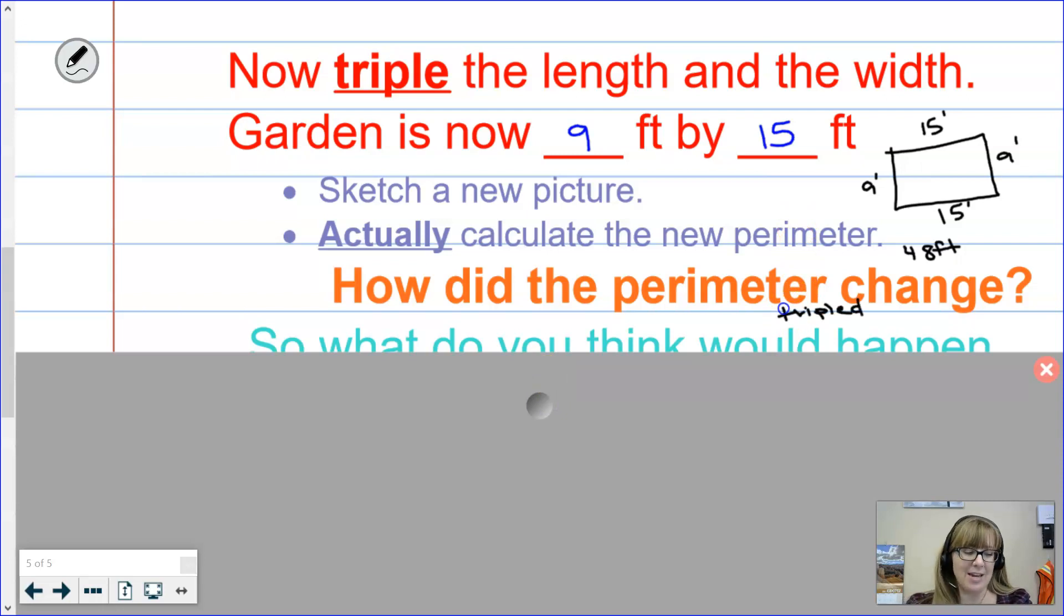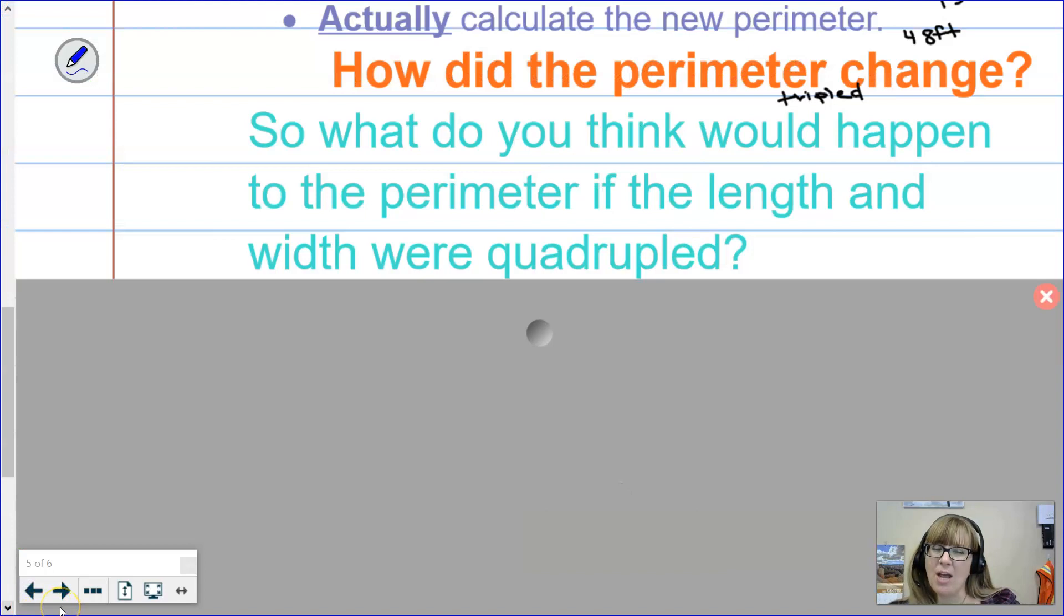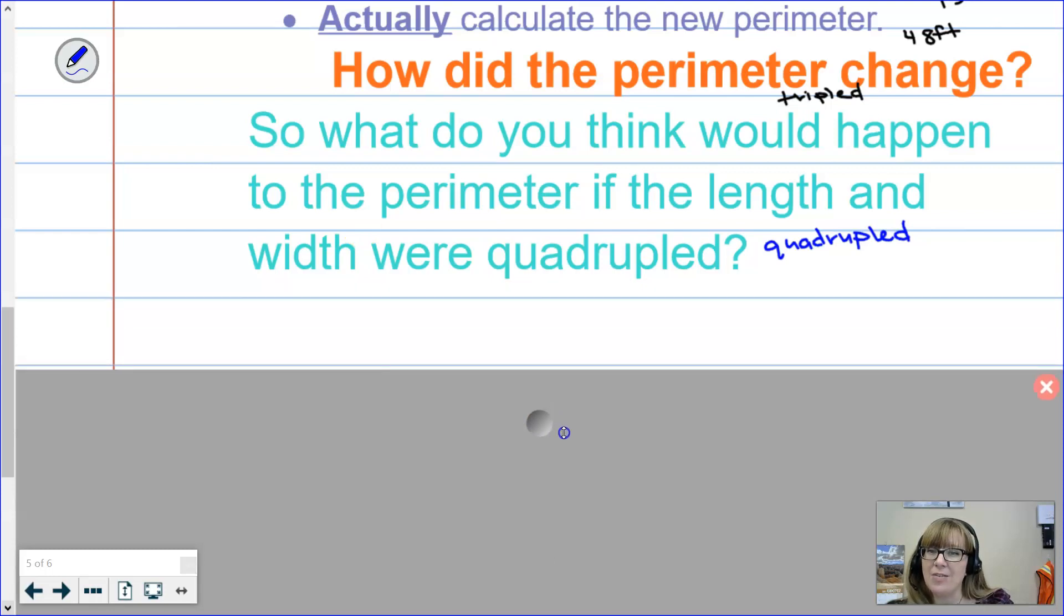So now it's time to apply math practice eight. What if now I quadruple the length and the width? What do you think is going to happen to the perimeter? Take a second and think about that. Make your estimate, remembering that when I doubled the length and width the perimeter was doubled. When I tripled the length and the width the perimeter was tripled. I'm hoping you're seeing a pattern and you're making the prediction that if we quadruple the length and the width then the perimeter is also going to be quadrupled, and that prediction would be absolutely correct. We wouldn't need to actually do any calculations because we're using math practice eight.